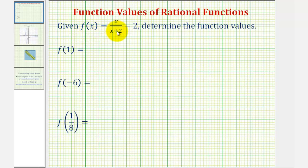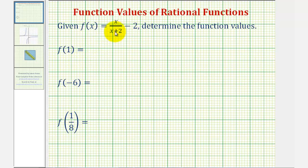We're given the rational function f of x and asked to determine the following function values: f of one, f of negative six, and f of one-eighth. We'll first do this by hand, then check the function values on the graphing calculator, and then also take a look at the graph of f of x.